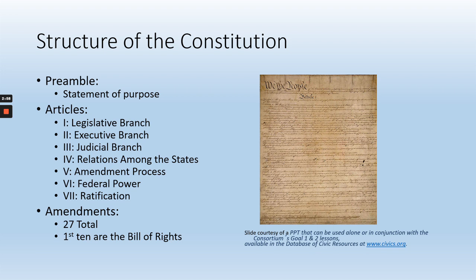Ratification is like official acceptance. We already talked about how there were only 55 people who showed up at the Constitutional Convention, and only about 40 of them were still left when it came time to sign the document. So 39 people agreeing to a document doesn't automatically mean the entire rest of the country is going to agree to it. There had to be a ratification process where each of the states was going to vote on the Constitution, and Article 7 gives the rules for that.